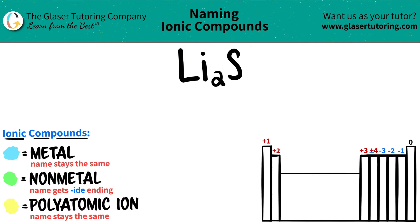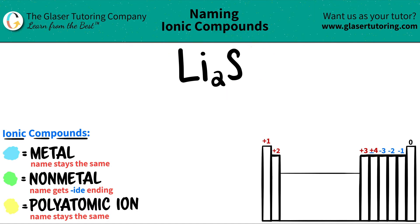Today we are going to be naming the ionic compound Li2S. If you have two elements — in this case we have two elements — we have Li, which is lithium, and S, which is sulfur.